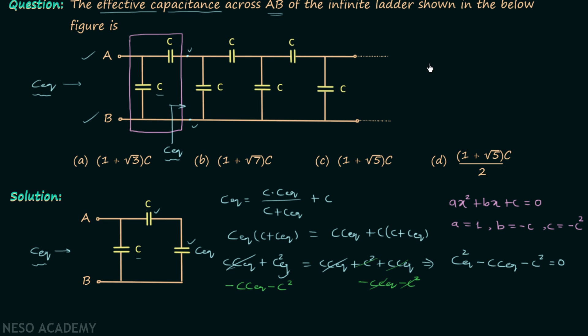And we know the formula to calculate the roots: X = (-B ± √(B² - 4AC)) / 2A. In place of X we have C_eq, in place of B we have minus C, in place of A we have 1, and in place of C we have minus C squared.